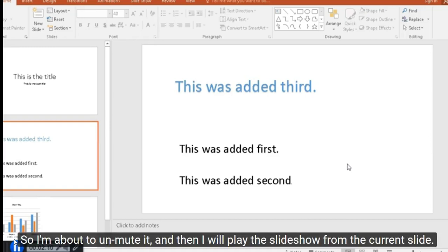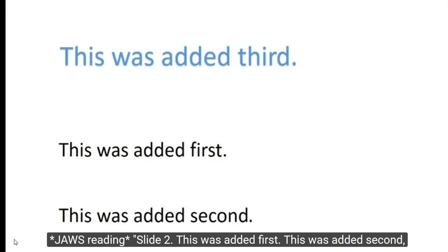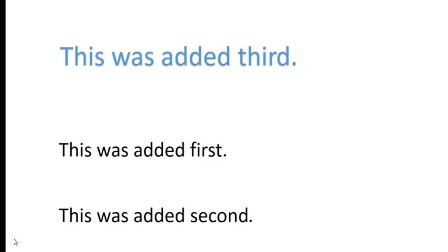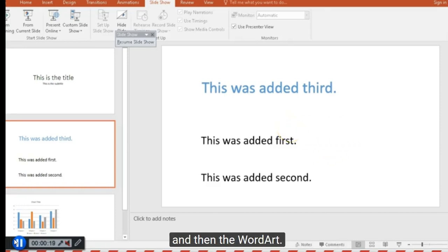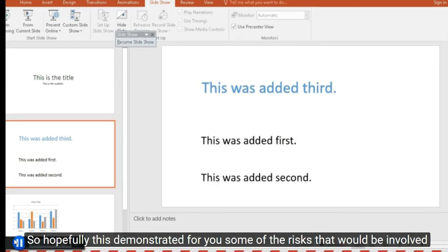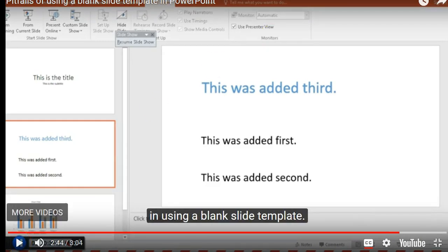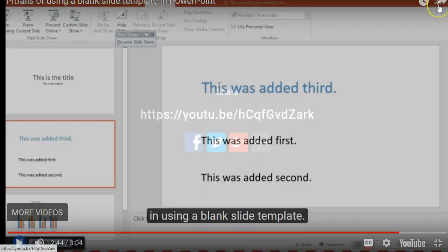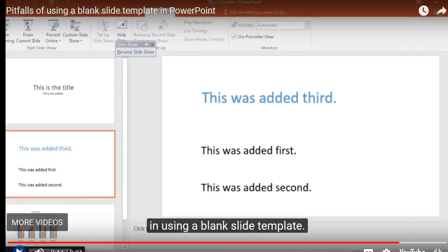I've now turned on JAWS and I'm about to unmute it and play the slideshow from the current slide. [JAWS reads]: 'Slide two. This was added first. This was added second. This was added third.' From that reading, you could hear that JAWS read the two text boxes first and then the word art — which is not how it appears on the screen. Hopefully this demonstrated the risks of using a blank slide template.